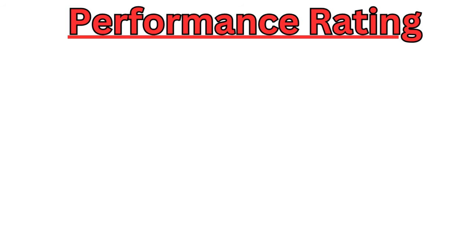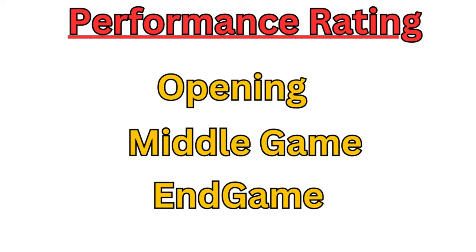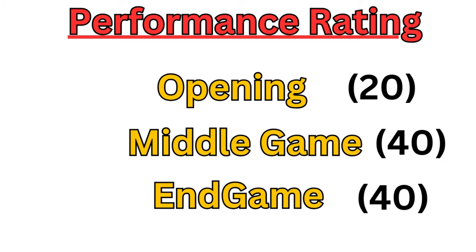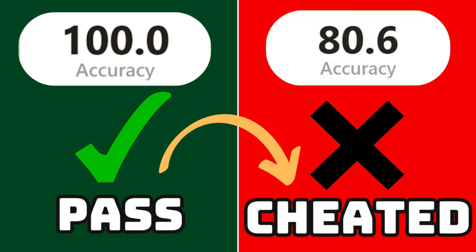Performance rating is a cumulative analysis of the opening, middle game and end game. After combining them with their allotted weight, they tell you what your actual playing strength was. With that, a player with very high accuracy may not be a cheater, and a player with less accuracy may actually be a cheater.